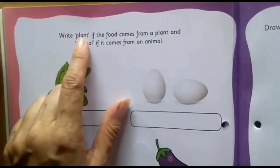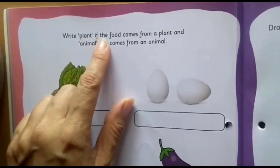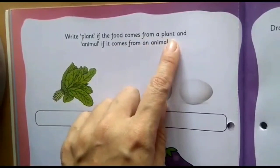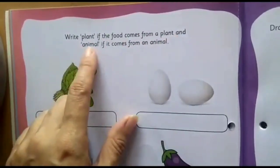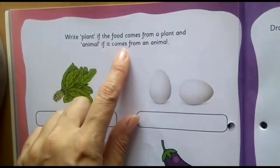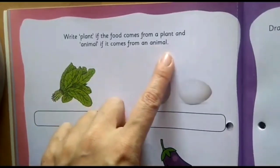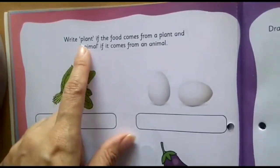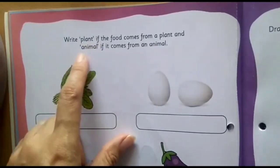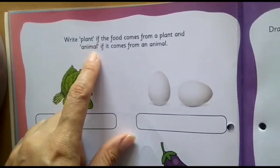Write plant if the food comes from a plant and animal if it comes from an animal. Okay, so we have to write the word plant and we have to write the word animal as they fit.